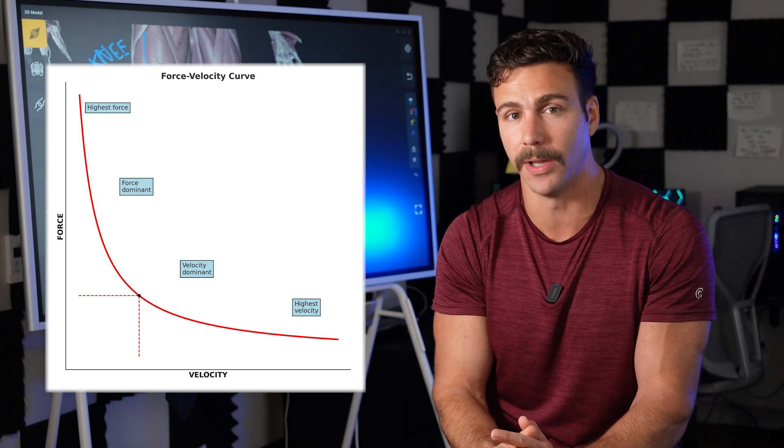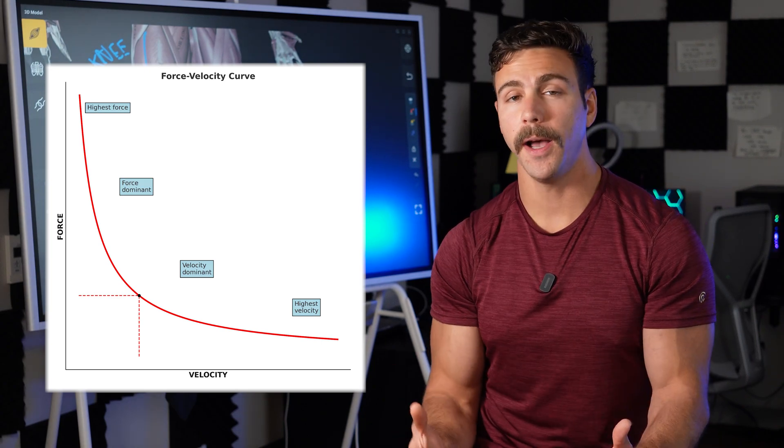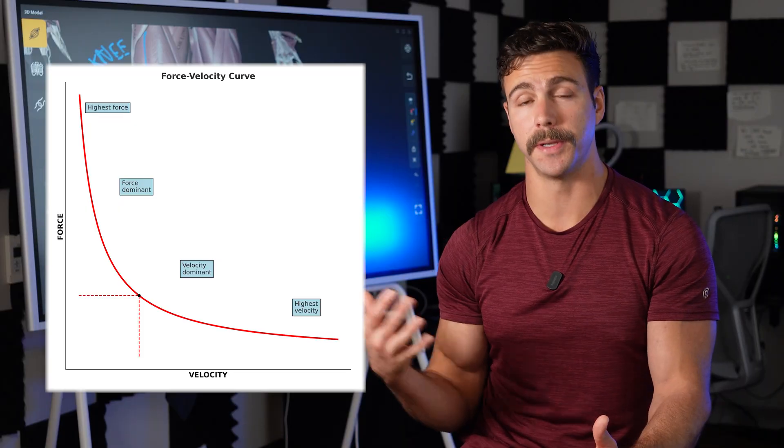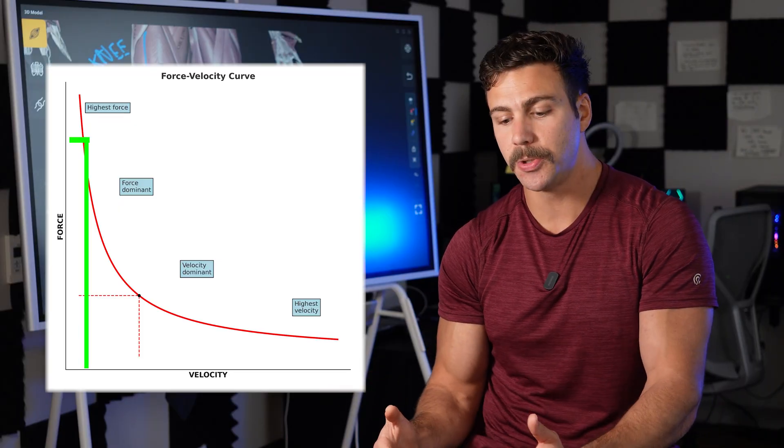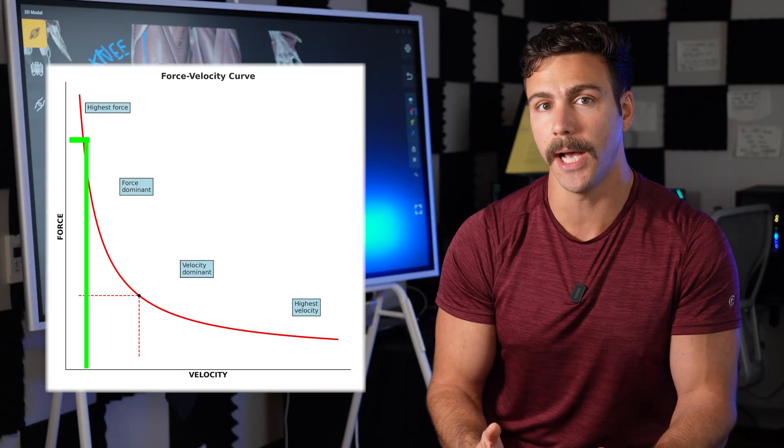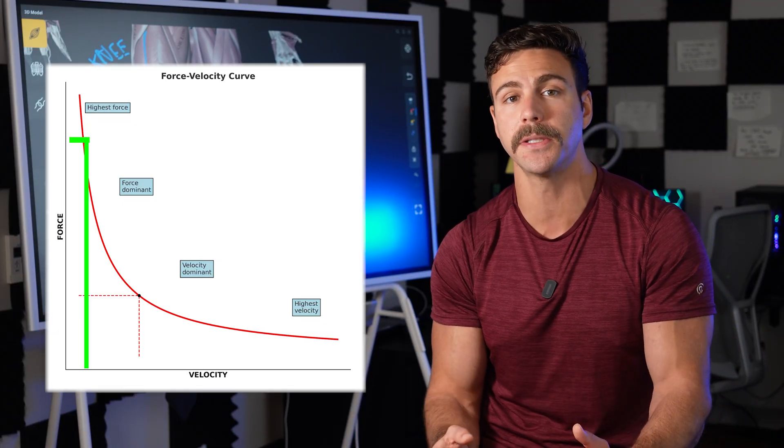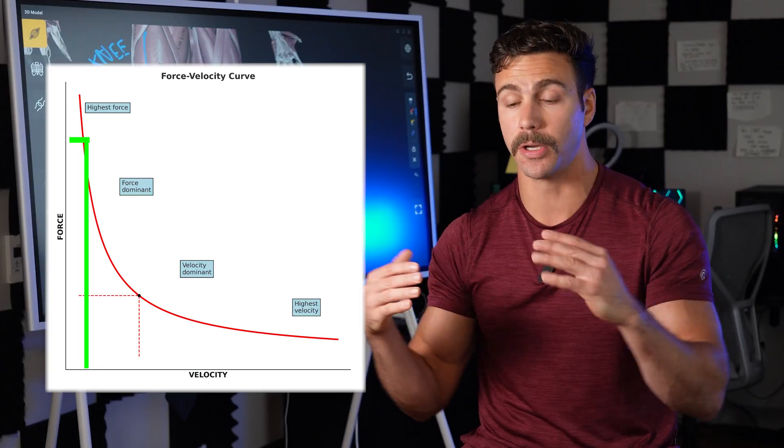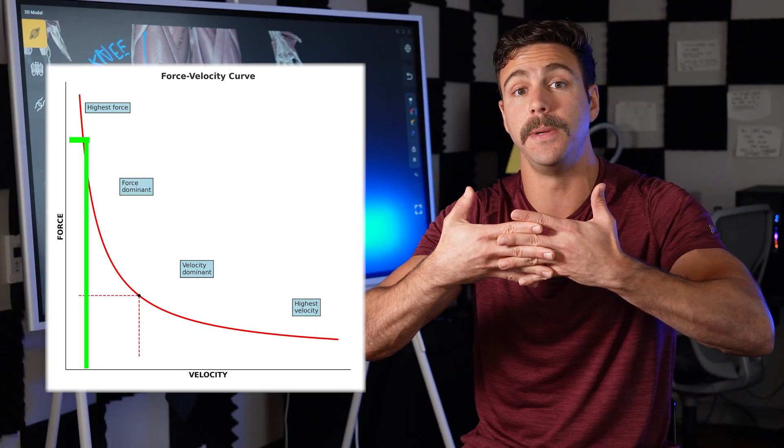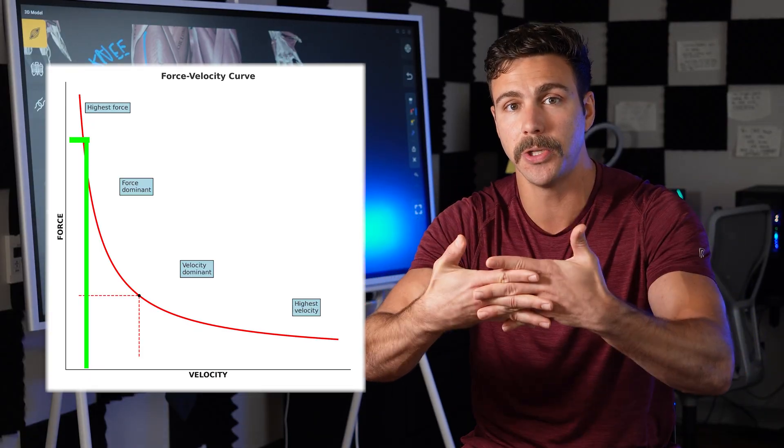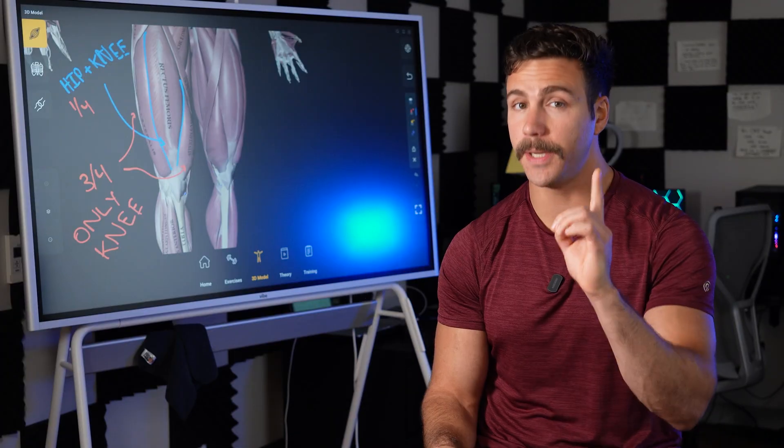And what we find when we look at this relationship or this graph is that as contraction speeds slow down, the amount of force or tension on the individual muscle fiber increases. So slower contraction speeds mean higher tension on the individual fiber. But here's the catch.